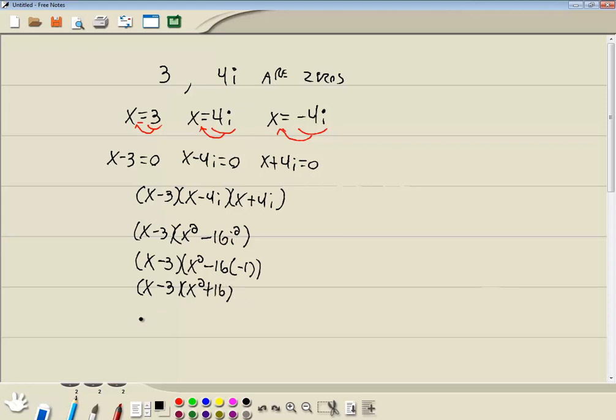Multiply these together: X times X squared is X cubed, negative 3 times X squared is negative 3X squared, X times 16 is 16X, and negative 3 times 16 is negative 48.